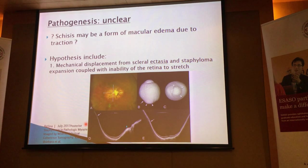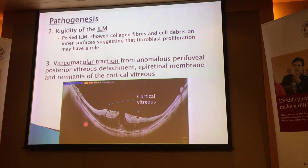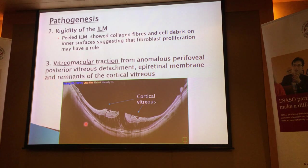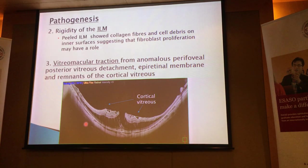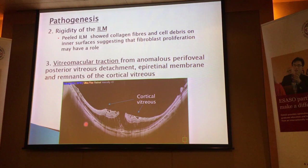Not every case is able to achieve the kind of draping of the contour that we see here. The second hypothesis is that it could be due to the rigidity of the internal limiting membrane. The reason why this was suspected was when they peeled off the internal limiting membrane — they saw that there were actually collagen fibers and cell debris on the inner surface of these membranes. That could suggest that fibroblast proliferation could have a role in causing the contraction of the membranes. The third pathogenesis possibility is vitreoretinal traction — anomalous or parafoveal posterior vitreous detachment can be in the form of epiretinal membranes or posterior cortical vitreous.